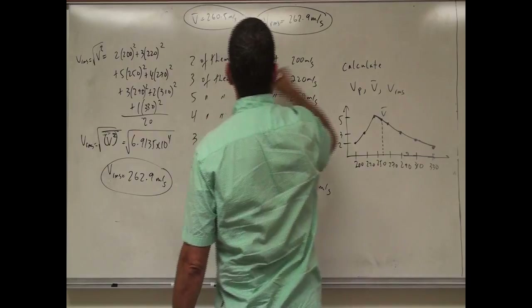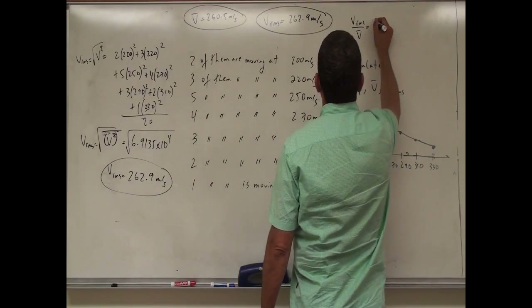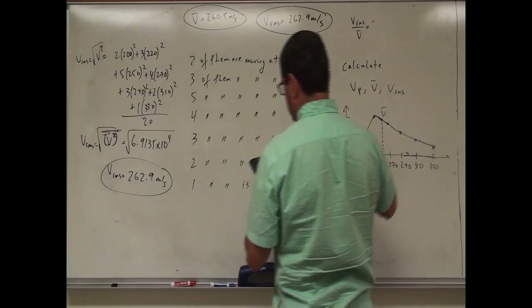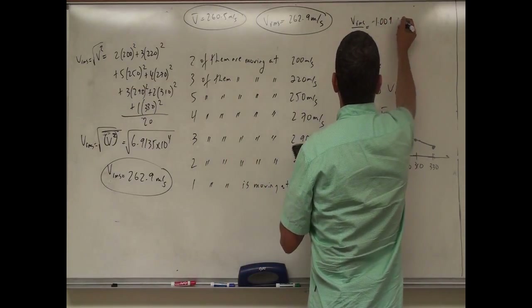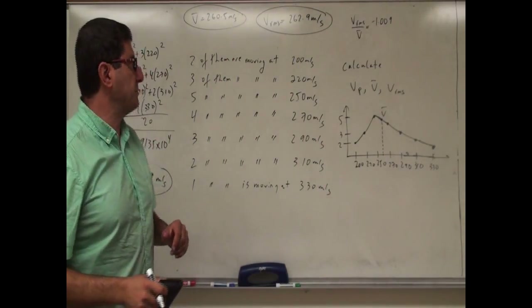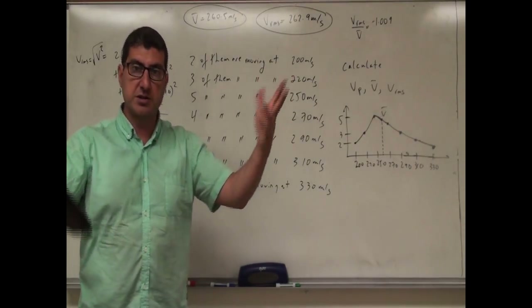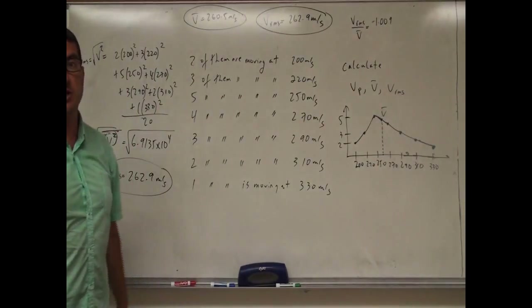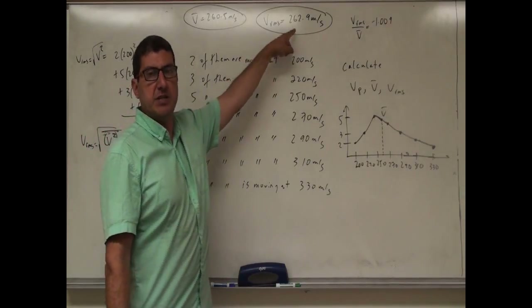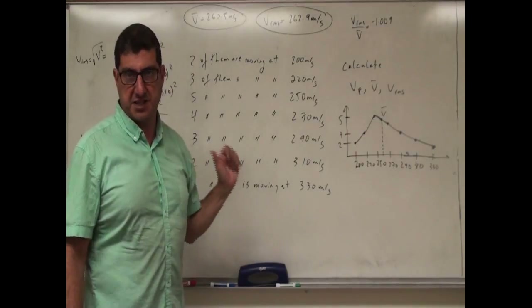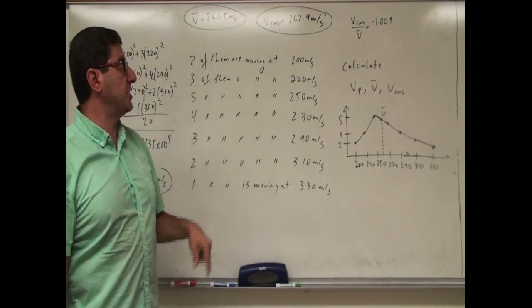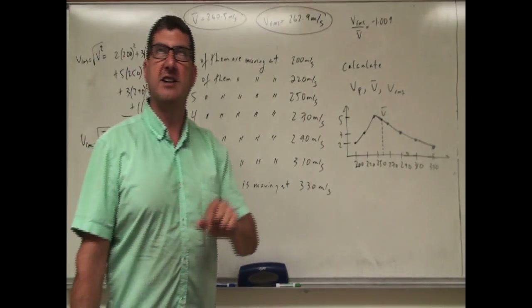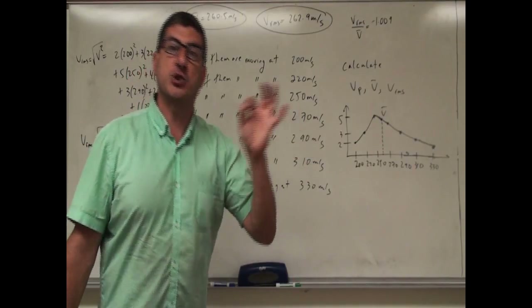How much larger is V_rms than V_average? Dividing 262.9 by 260.5 gives a ratio of 1.009. It was supposed to be about 5% larger in theory, but again that applies with many particles distributed from 0 to infinity. What we do show is that the root mean square speed is always larger than V_average.